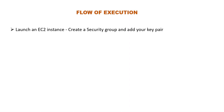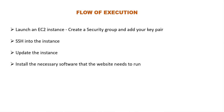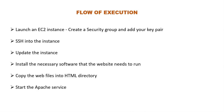The first step is to launch an EC2 instance, create a key pair, and add a security group. The second step is to SSH into the EC2 instance. The third step is to update the instance — that is, updating the package manager. The fourth step is to install the necessary software the website needs to run. The fifth step is to copy the web files into the HTML directory. Then we'll start the Apache service. And lastly, we'll confirm and validate that our website is actually running. So grab a cup of coffee, make yourself comfortable, and let's get started.